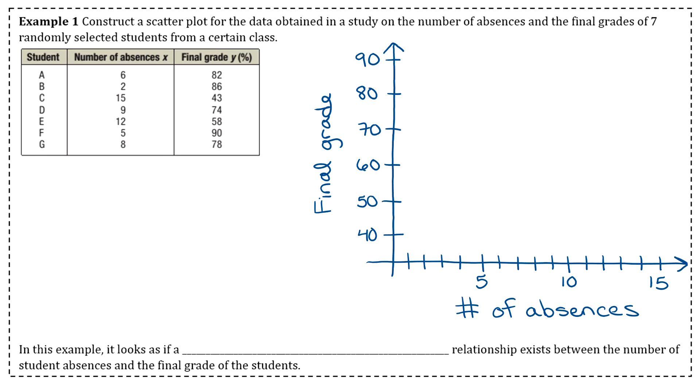We're just going to plot all our points. Try to be as accurate as you can, though it won't be perfect. Student A had six absences and a final grade of 82, so that's the ordered pair (6, 82). Go over six and estimate where 82 is. Then plot the other six students: (2, 86), (15, 43), (9, 74), (12, 58), (5, 90), and (8, 78).